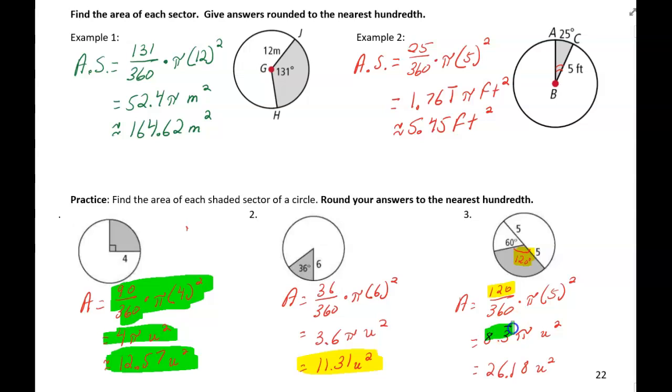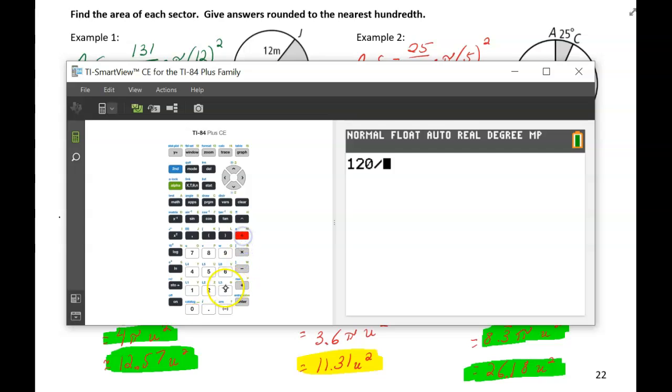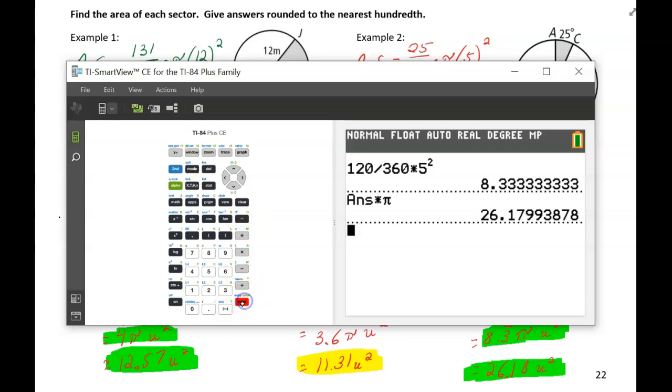Typing that in my calculator, I get 8.3 repeating times pi. And then when I typed 8.3 repeating times pi, I got my final answer. And I'm going to show you the calculator on how I did that one. So for the third problem there, I'm going to say 120 divided by 360 times 5 squared. So there's the 8.3 repeating. And then multiply that by pi is how I get the final answer, 26.18.